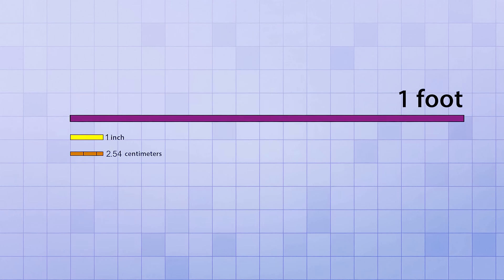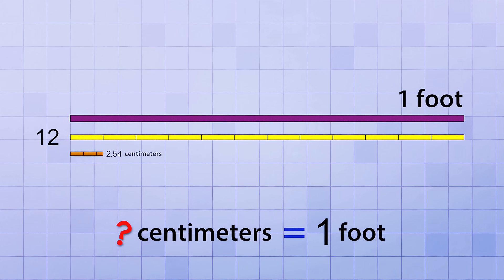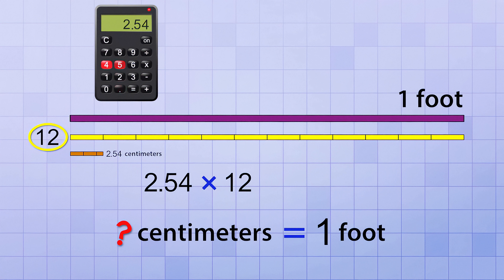But now, let's bring in a foot. We know that there's exactly 12 inches in a foot, which means that a foot is 12 times longer than an inch. So, how many centimeters are there in a foot? Well, since there's 2.54 centimeters in an inch, if we multiply that by 12, we'll know how many centimeters are in a foot. Using my trusty calculator, 2.54 times 12 equals 30.48. So a foot is exactly 30.48 centimeters long.